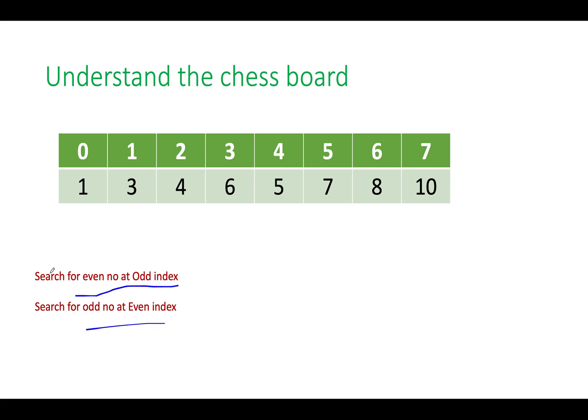Let's try and look at that approach. The question itself gives a hint that we need to identify two elements. If there is an even number that exists at an odd index we need to swap it with any other odd number at an even index and this is what we will exactly follow. So let's take two pointers. The first one that we will search for is an even number at an odd index and the second one that we will search for is an odd number at an even index.